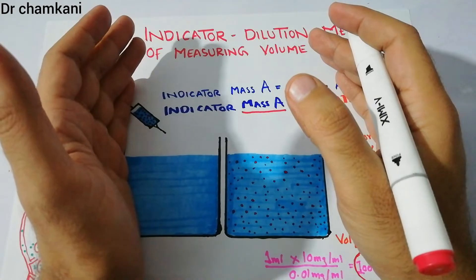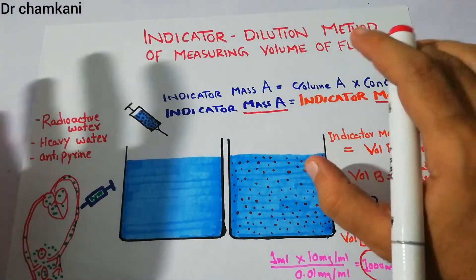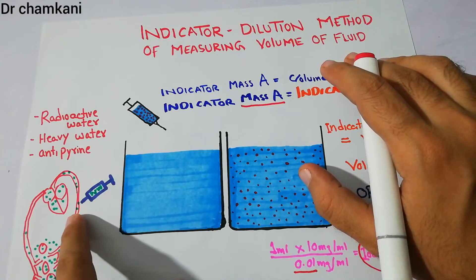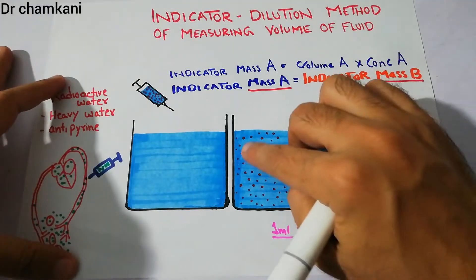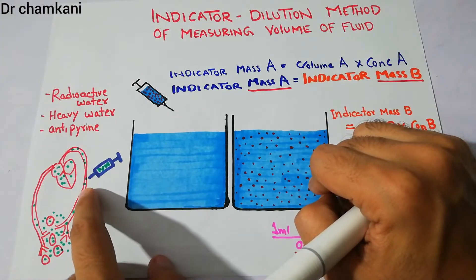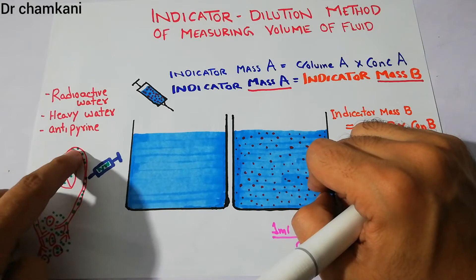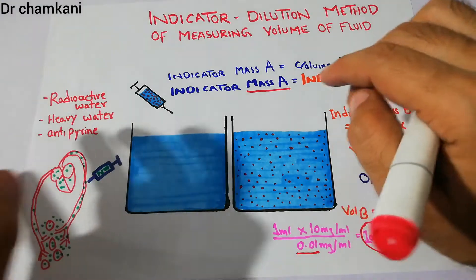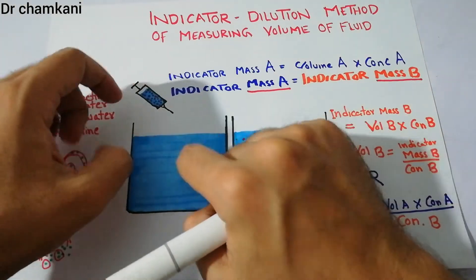Now to use this indicator dilution method to measure total body water, we take an indicator and inject it into the human body. The indicator must have the quality to properly distribute throughout the total body fluid — into the plasma, the interstitial fluid, and also inside the cells. So it distributes equally throughout all body fluids, just like the indicator distributes equally after being put into a fluid.